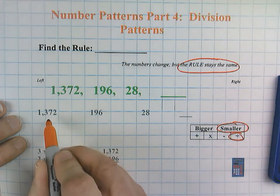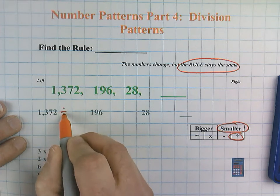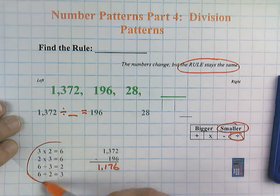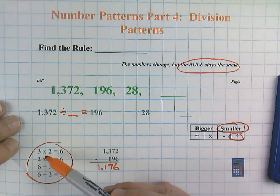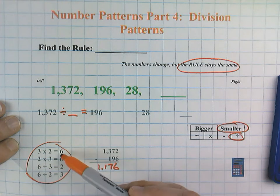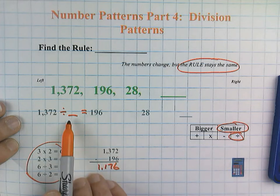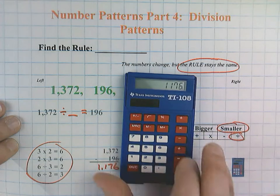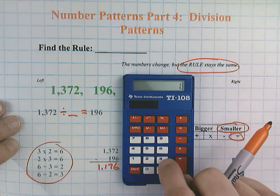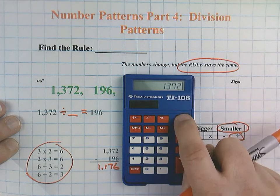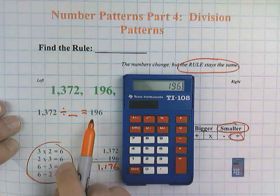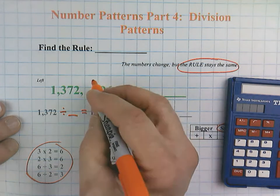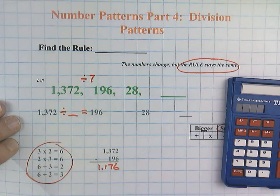So what we're going to do is we're going to say 1,372 divided by blank will equal 196. Now, you remember way back first and second grade, you did fact families, and the idea is that you can use the same three set of numbers and get interchangeable answers for multiplication or division. We're going to do the same thing here. We need to find this answer, but to do that, we're actually going to divide by 196. So 1,372 divided by 196 equals seven.